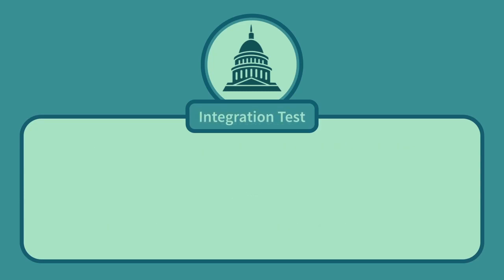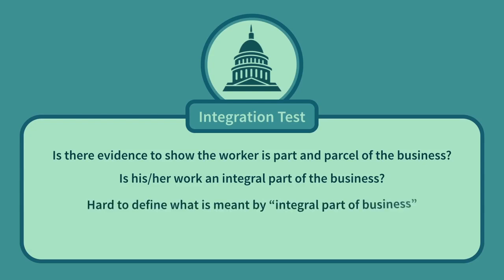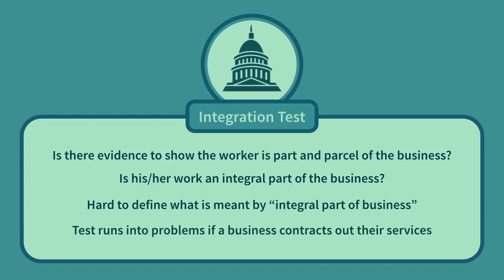The integration test: is there evidence to show the worker is part and parcel of the business? Is their work an integral part of the business? If so, then the worker may well be an employee. If not, they may be an independent contractor. This phrase can be hard to define, and this test runs into problems if businesses contract out their services — for example, councils that obtain the services of refuse collection businesses. The question is whether rubbish collectors should be considered employed by the council or by the company contracted by the council to collect the rubbish. A good case on point here is Lee v Chung.